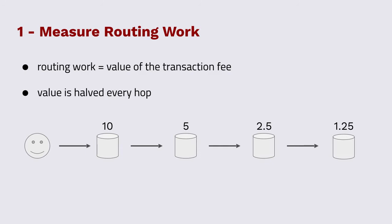The first thing we're going to do is create a measure of routing work. Routing work is not the transaction fee, but it's a value we're going to derive from the transaction fee — you can think of it as the value of the transaction fee divided in two with every hop the transaction makes across the network. We use cryptographic signatures on the network layer so that people can't cheat. So in this example, the first hop has 10 units, the second hop has 5, the third has 2.5, and the total amount of routing work in this four-hop chain is 18.75.